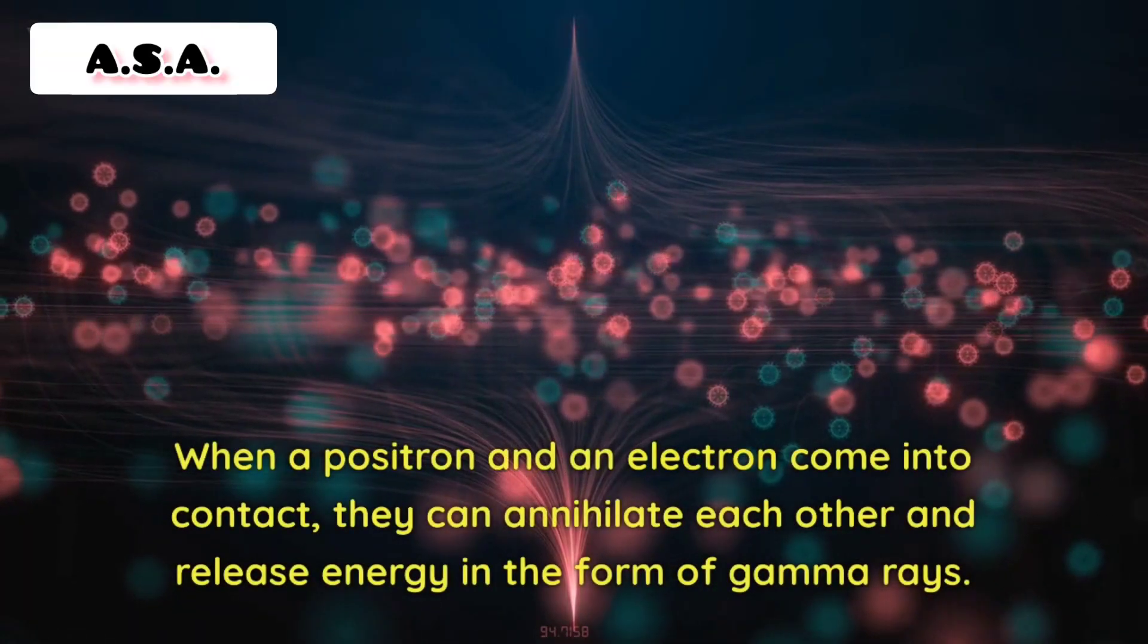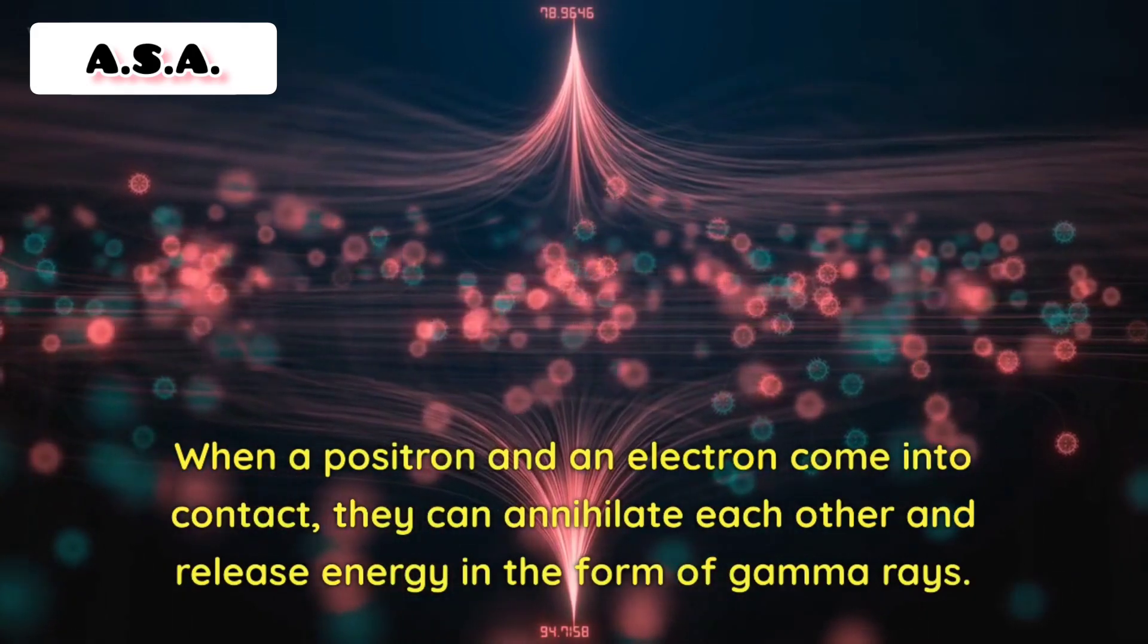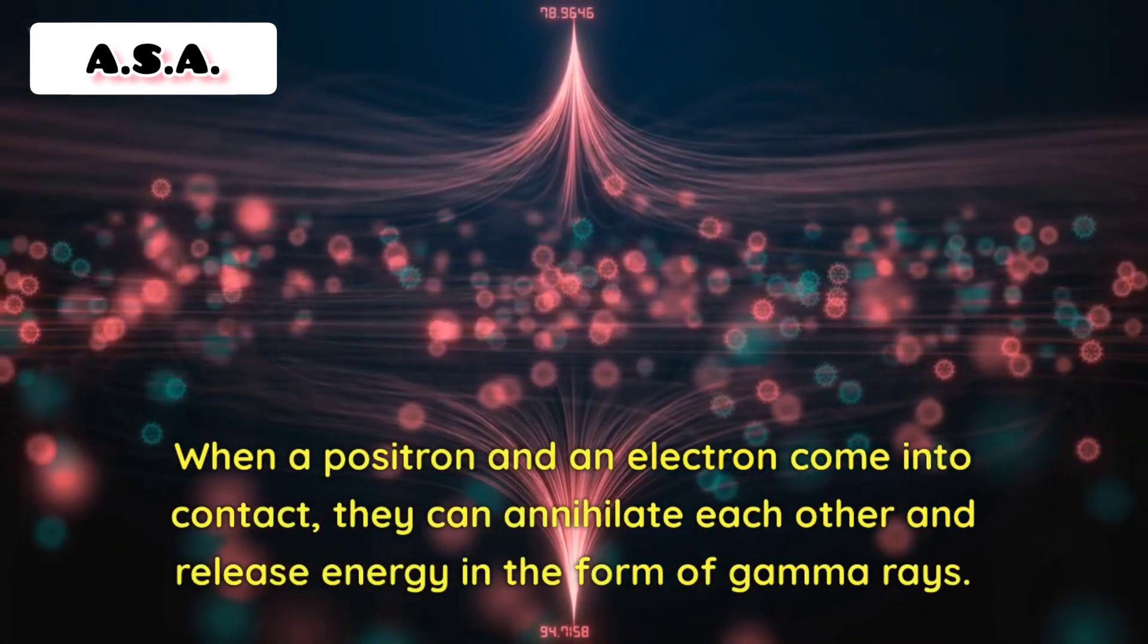When a positron and an electron come into contact, they can annihilate each other and release energy in the form of gamma rays.